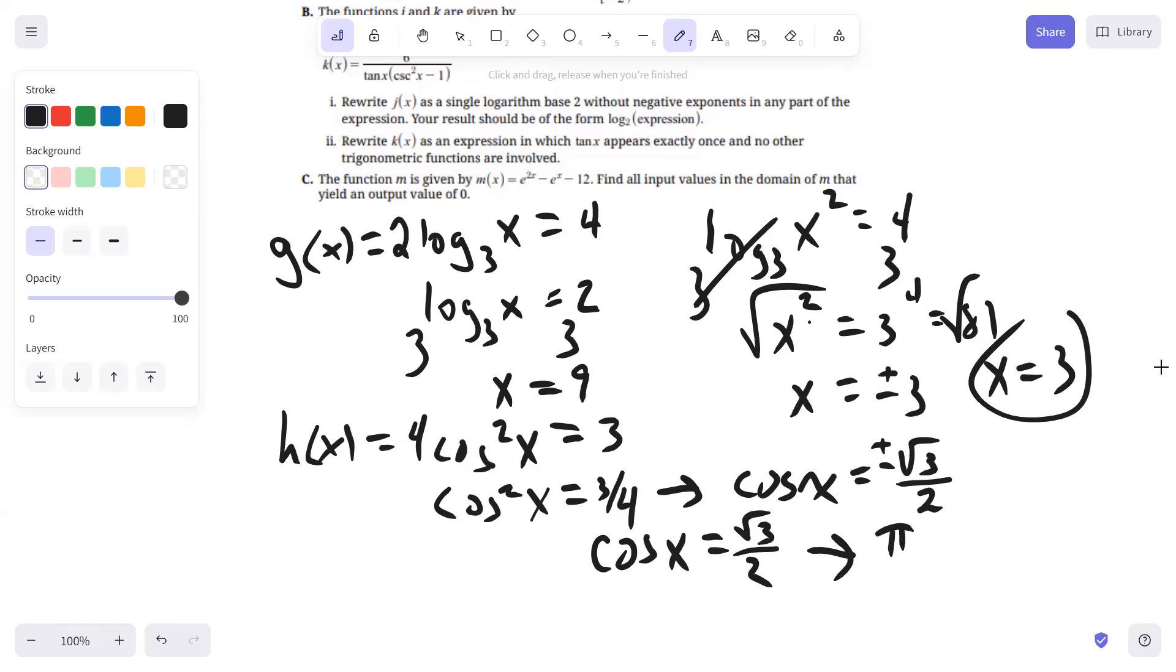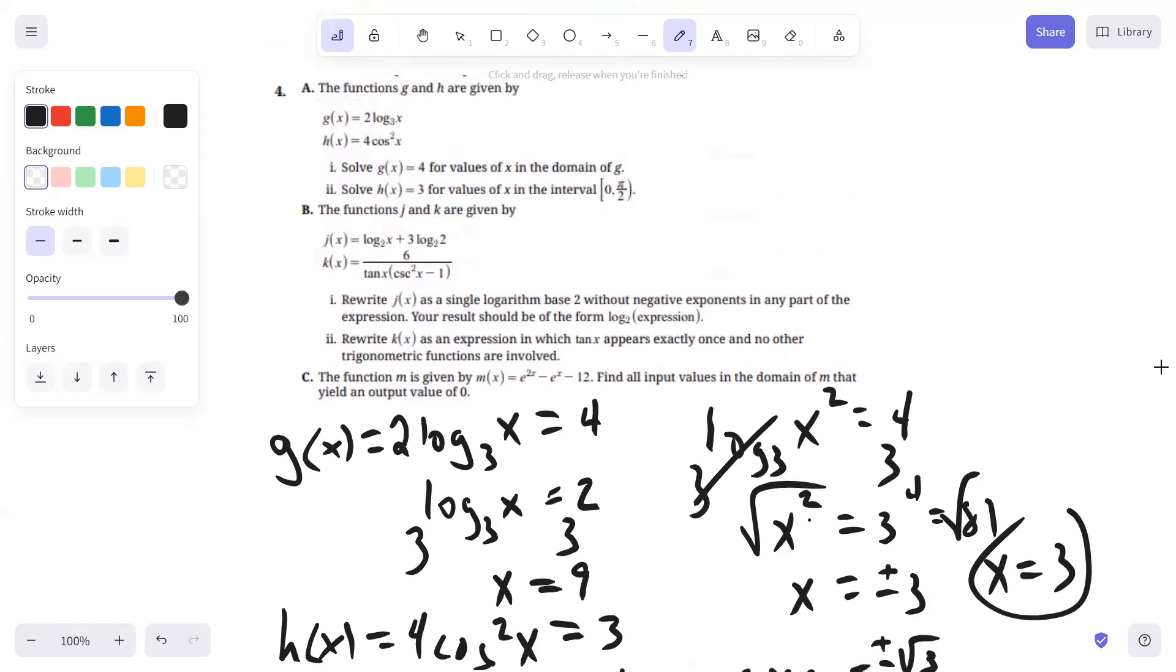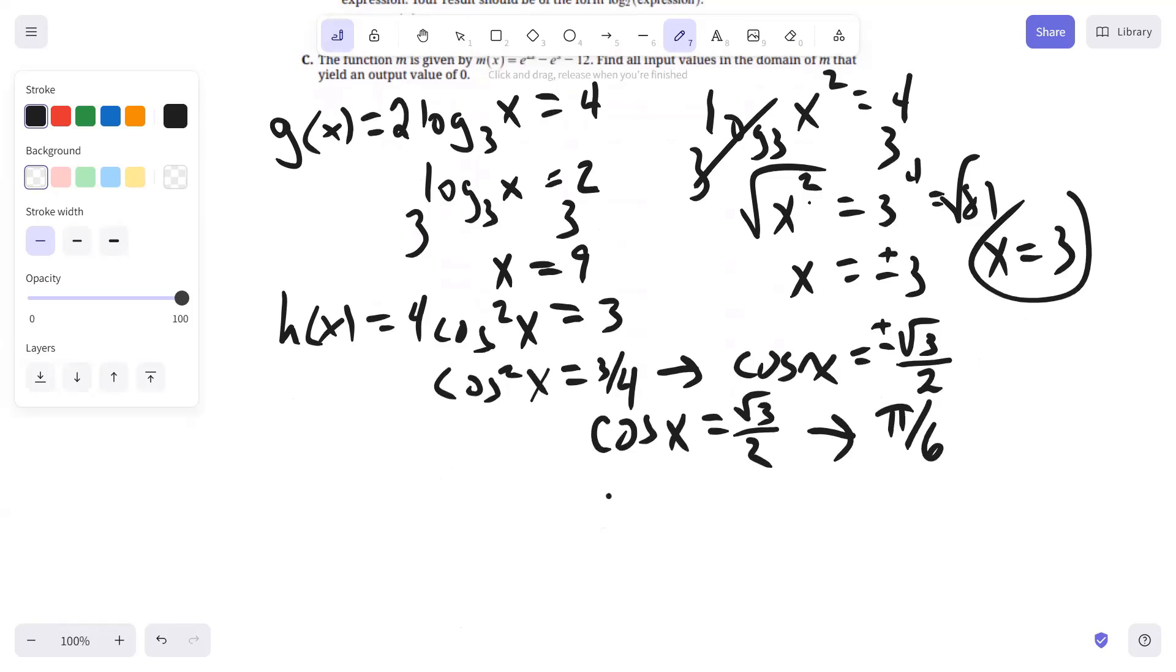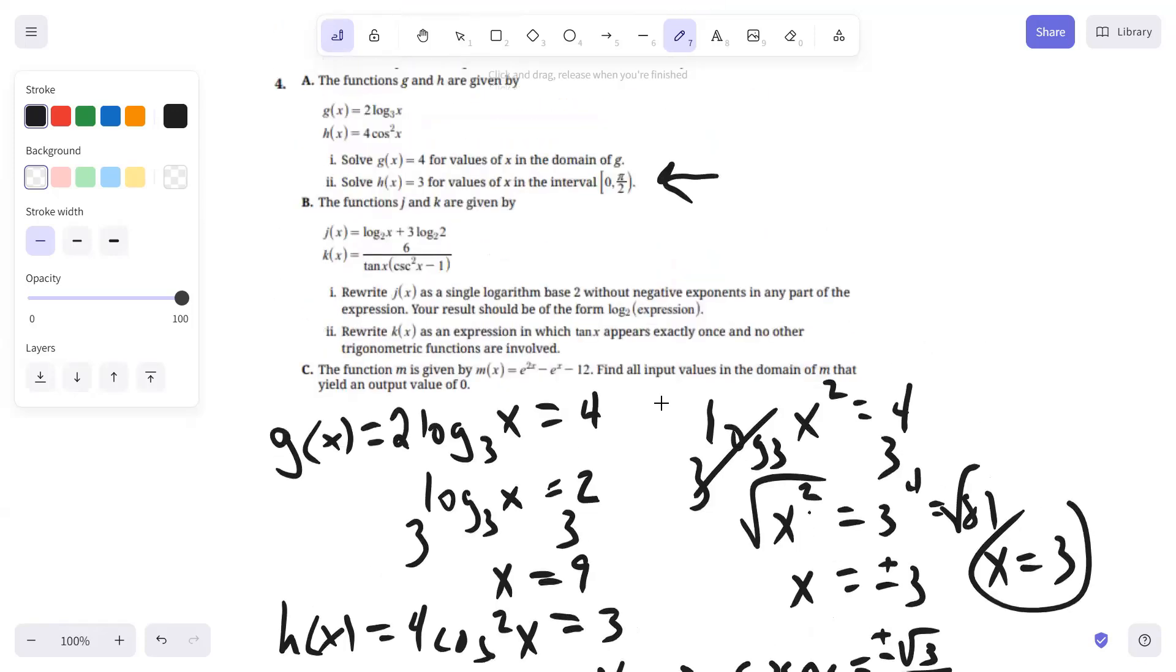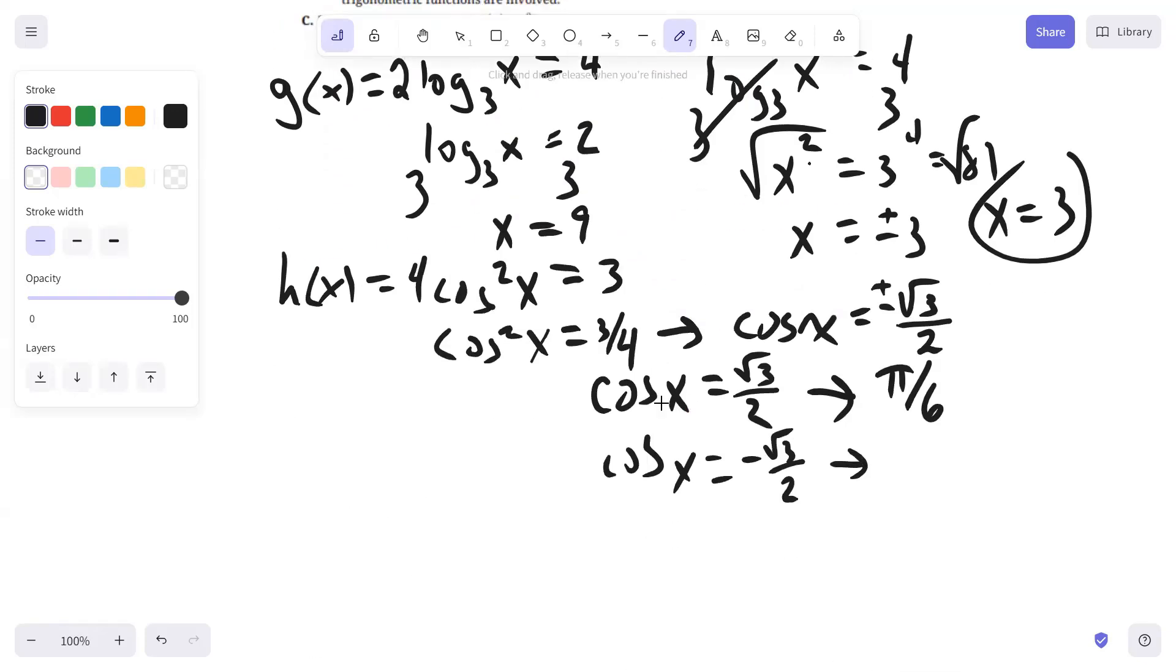Cosine X equals negative root three over two in quadrants three and two. If you think about the unit circle, the value would be greater than pi over two. In other words, this is going to be five pi over six and seven pi over six, but those aren't on the interval. So our only answer is X equals pi over six.